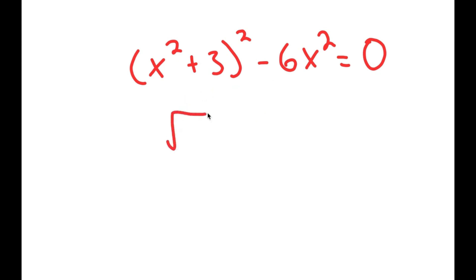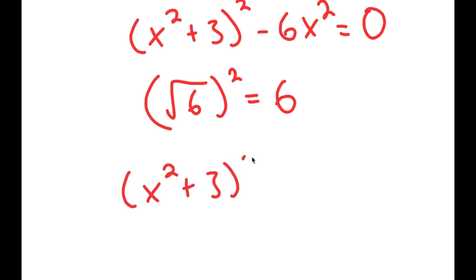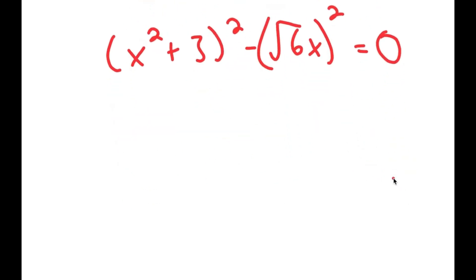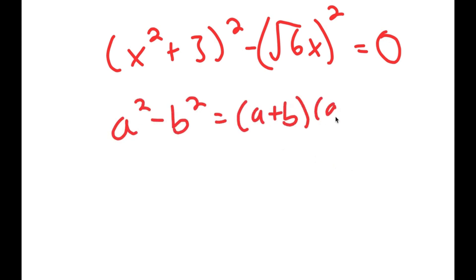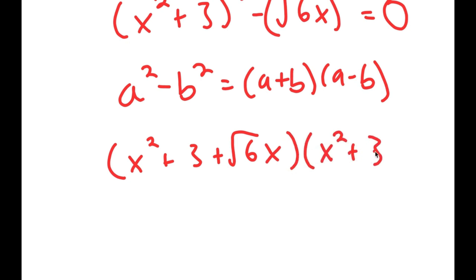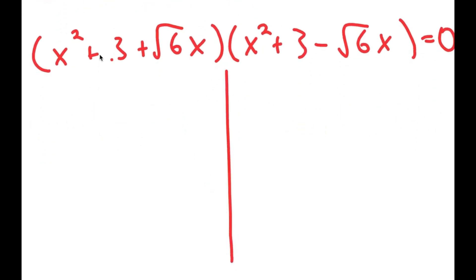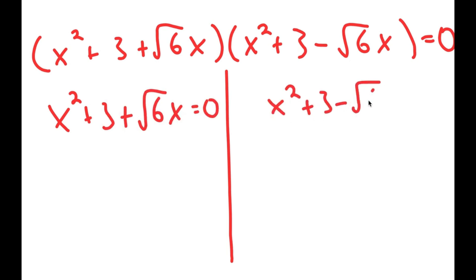Remember that the square root of 6 squared is equal to 6, so I'm going to rewrite this as x squared plus 3 squared minus (square root of 6 times x) squared equals 0. Now I can use the property a squared minus b squared equals (a + b)(a − b), which gives me (x squared + 3 + √6·x)(x squared + 3 − √6·x) equals 0. So this gives me two equations: x squared + 3 + √6·x = 0 and x squared + 3 − √6·x = 0.